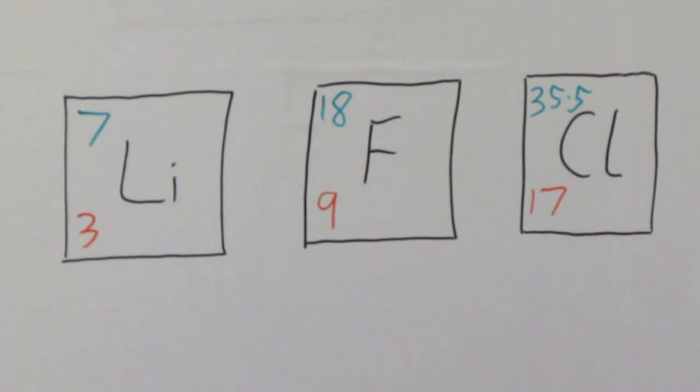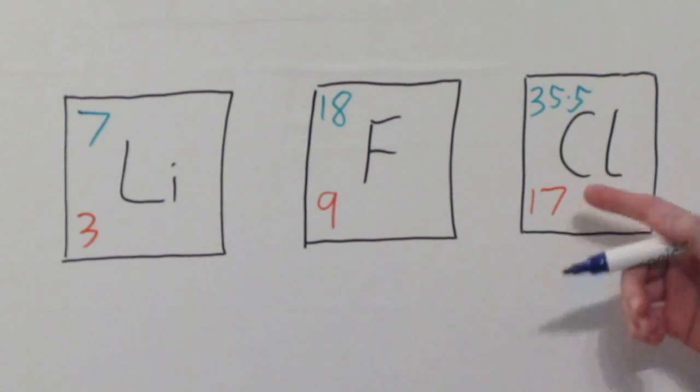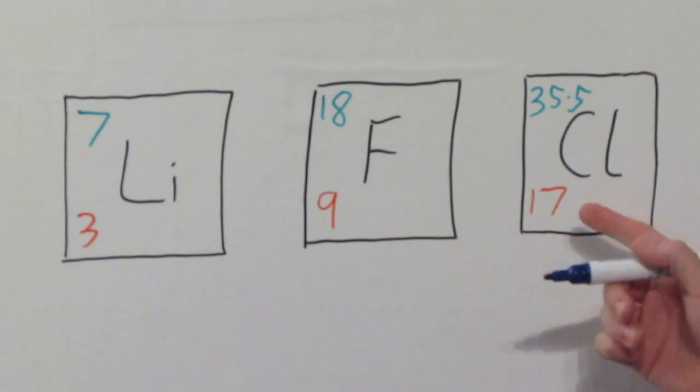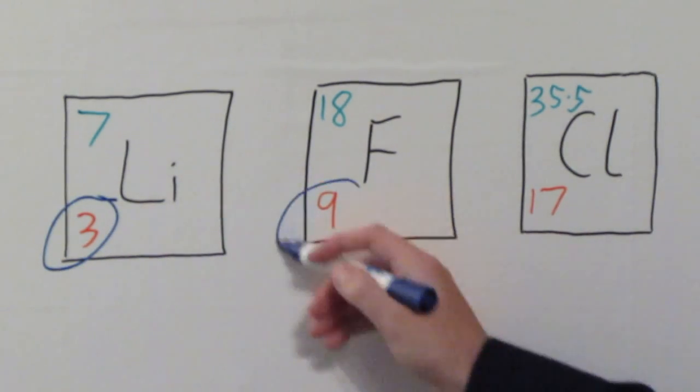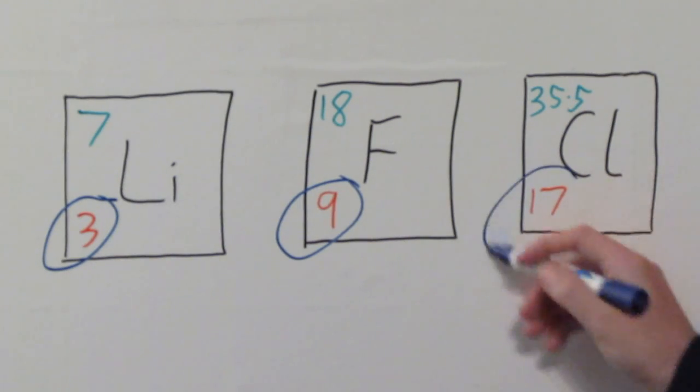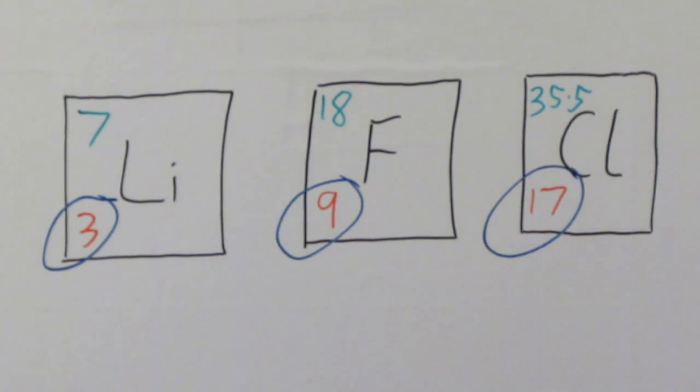And remember, particularly, whenever you're dealing with any of these at all, it's always the small number. Sometimes, just to confuse matters, the small number will be on the top. You're most likely to see it written at the bottom here. Okay, so for lithium, three electrons. For fluorine, nine electrons. For chlorine, 17 electrons. You don't even need to worry about the fact that chlorine has this unusual-looking 35.5 as its mass number. You're just interested in the small number. That's all that matters when it comes to electron diagrams.